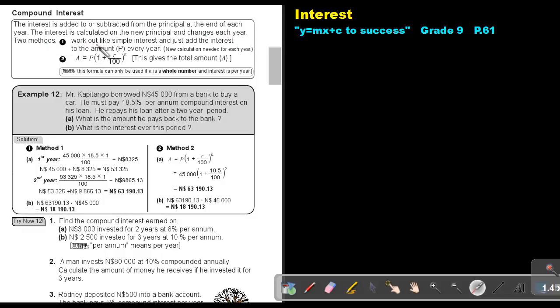Two methods. You work out like simple interest and just add the interest to the amount every year. So a new calculation is needed for each year. Or you can use the formula. To find the amount, you take the principle bracket 1 plus the rate, the percentage, divide by 100, and that N stands for the amount of years. So this will give you the total amount. Note, this formula can only be used if N is a whole number and interest is per year.